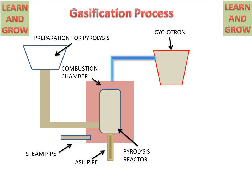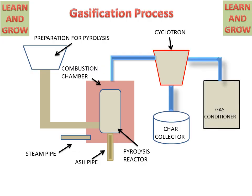The pyrolysis or conversion chamber is connected to the cyclone for extracting char particles. The cyclone is then connected to the gas conditioner where tar particles are extracted and cleaning of the gas takes place. After this, syngas is produced which is further used for electricity generation or other uses.